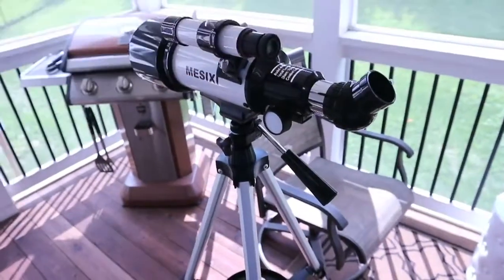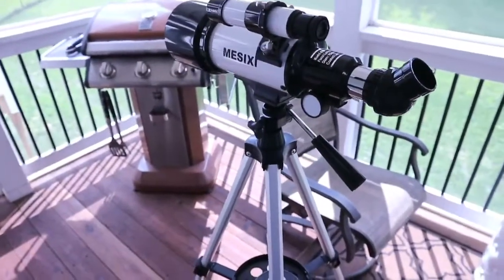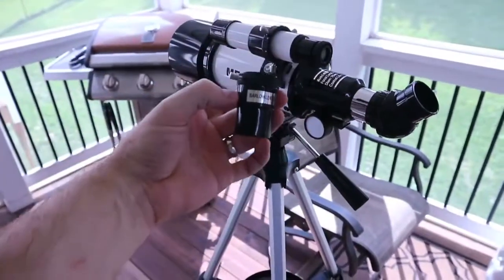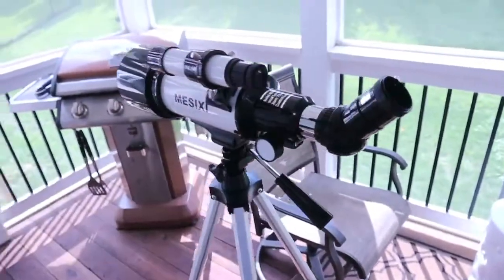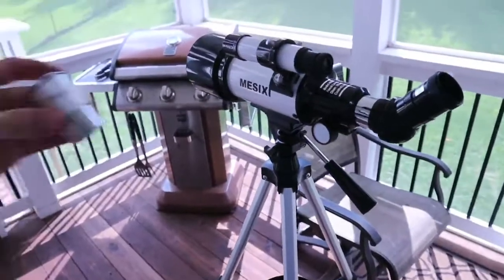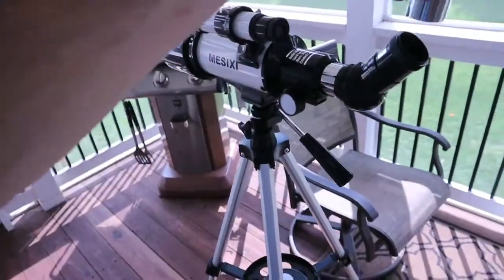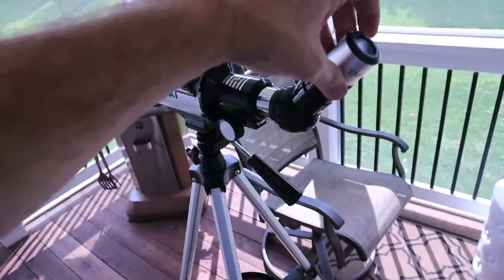And to increase the magnification you can use the Barlow lens. This is a three times Barlow lens that accompanies this telescope and you just put it in between the Zenith mirror and the eyepiece itself and lock everything down with the small bolts on the side.